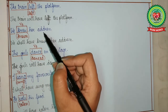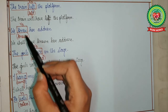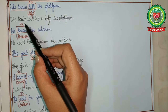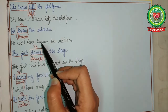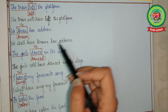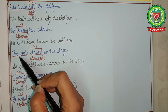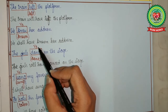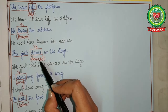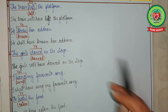'We knew her address.' Subject: we — shall have. Knew changes to known. Answer: We shall have known her address. 'The girls dance on the stage.' Subject: the girls — will have. Dance changes to danced. Answer: The girls will have danced on the stage.